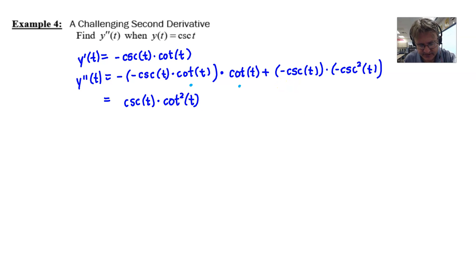And then as far as this last term is concerned, well, we have a cosecant and a cosecant squared. They can be multiplied together to make a cosecant cubed. And of course, as you would probably predict, the two negatives could cancel out. So this would be a perfectly acceptable solution for the second derivative.